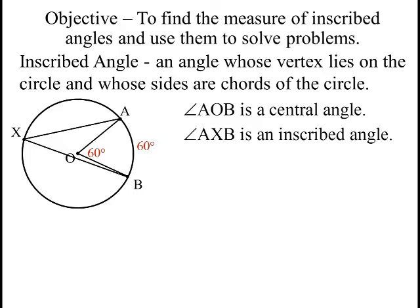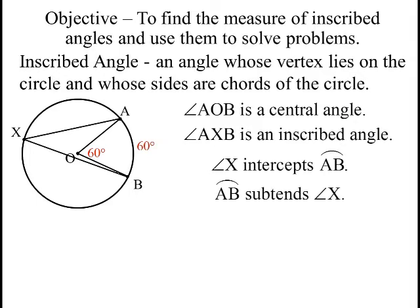Now, the language is a little tricky here. We say angle X intercepts arc AB, where the proper way to reverse it is arc AB subtends angle X. I personally can never remember that, so I always say that arc AB is intercepted by angle X. That's the language I use - I think it's easier to understand.